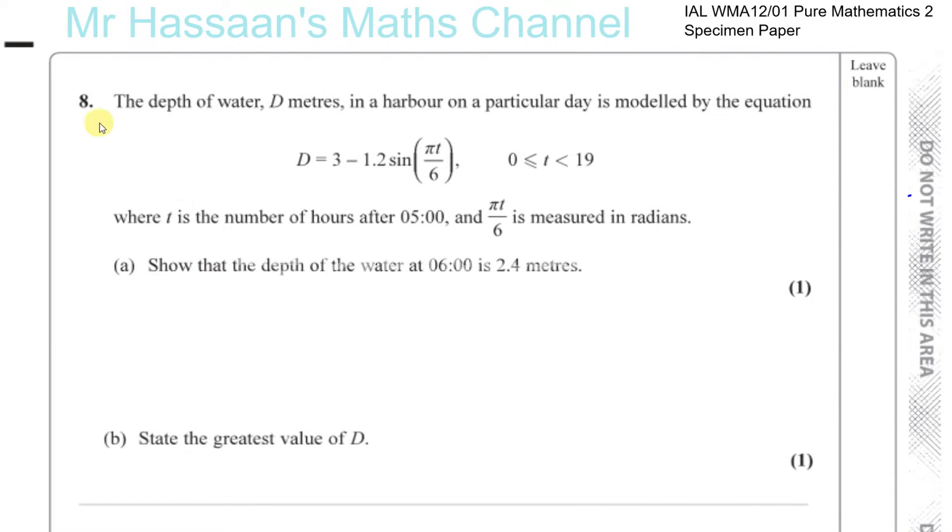Okay, question number 8. The depth of water D meters in a harbor on a particular day is modeled by the equation D equals 3 minus 1.2 sine pi t over 6, where t is greater than or equal to 0 and less than 19. And t is the number of hours after 5 a.m., 0500 hours. And pi t over 6 is measured in radians.